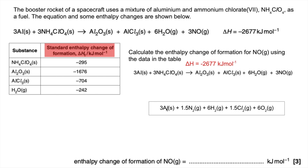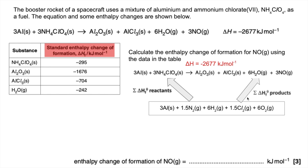Put the correct moles of elements and state symbols in the box: three moles of aluminium, one and a half moles of N2, six moles of H2 — checking: three times four is twelve, six times two is twelve — and so on. With the elements at the bottom, we then go up to the reactants from the elements, which represents the sum of the enthalpy changes of formation of the reactants.